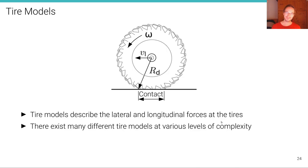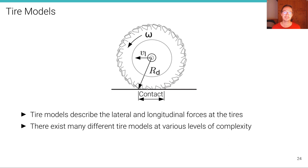So we need to go beyond the kinematic bicycle model. In order to understand what slip is and the relationship between slip and forces, we need to understand tires better. Here's an example of a tire made of rubber with pressurized air inside. Based on the air pressure and the weight of the vehicle, there is a contact patch — the area defining the contact between the wheel and the ground.